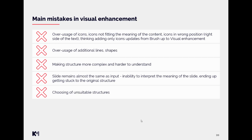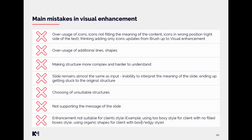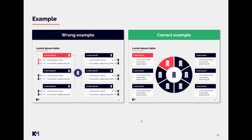It is also not good when we choose an unsuitable structure for the slide — really think about what the slide is saying, whether it's a timeline, a process, or similar, and apply the structure that fits that meaning. We also have to make sure we are supporting the message of the slide; sometimes the overall visual does not support the message and wrong elements are highlighted. The last point is that enhancement sometimes doesn't suit the client style — for example, too boxy for a client with no filled boxes, or too many organic shapes like round edges for a client that prefers a boxy, edgy style.